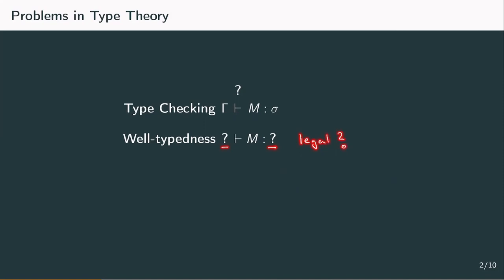This is called well-typedness. Type assignment is a similar concept, where not only m but also gamma is given, and we want to know whether there exists a type for m under this given context.